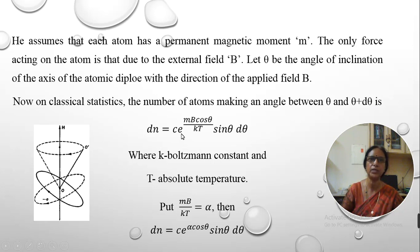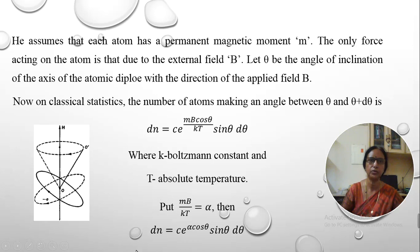Let theta be the inclination of the axis of the dipole. Then the number of atoms present in the small range of inclination theta and theta plus d theta is given by: dN = C · e^(MB cosθ / KT) · sinθ · dθ, where T is the absolute temperature and K is the Boltzmann constant.